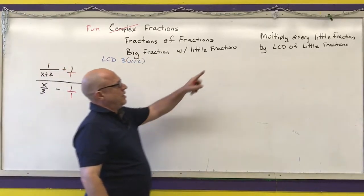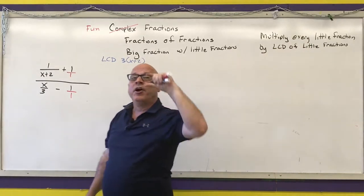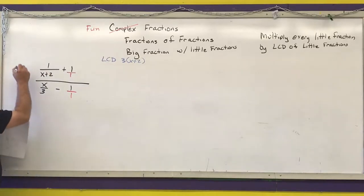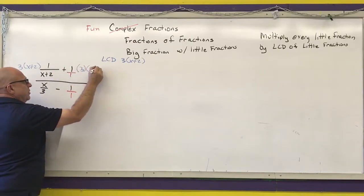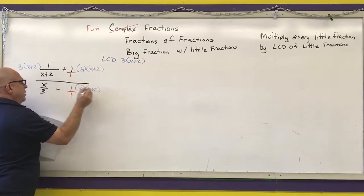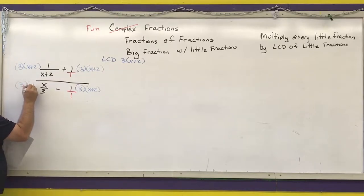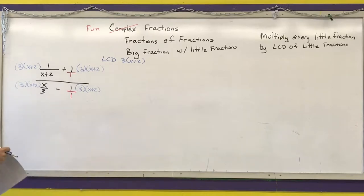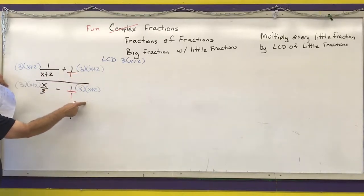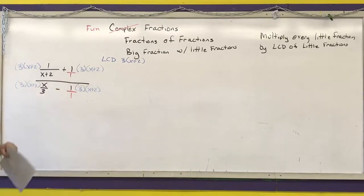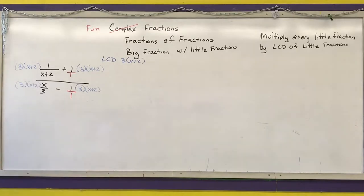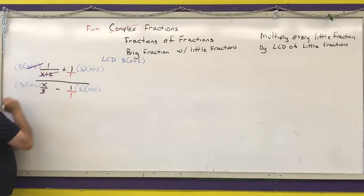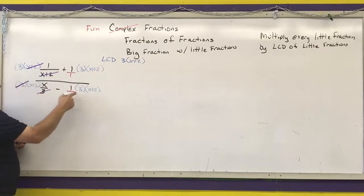We are going to multiply every little fraction by that LCD — and you're only multiplying the top. This is a legal operation because I'm multiplying the numerator and the denominator of the big fraction by the same thing, and anything over itself is 1, except for 0. The x plus 2 cancels in one term, the 3 cancels in another.